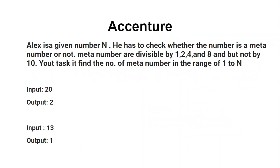Let's begin with this question. Alex is given a number and he has to check whether the number is a meta number or not. Meta numbers are numbers that are divisible by 1, 2, 4, and 8, but not by 10. Your task is to find the count of meta numbers in the range of 1 to N.